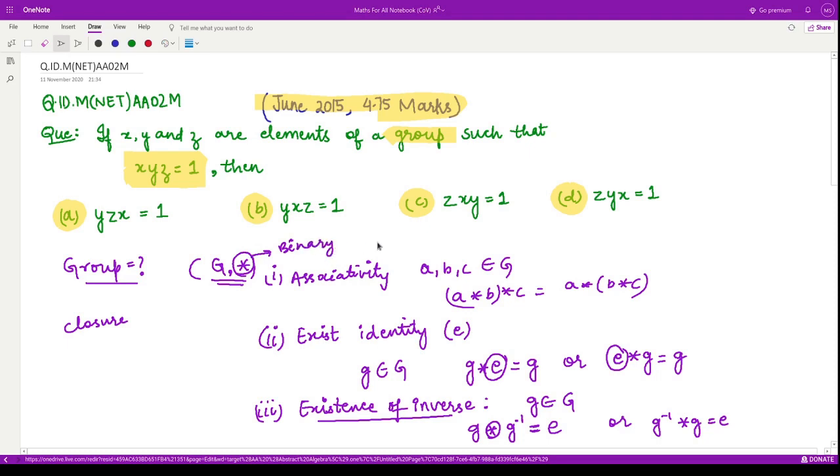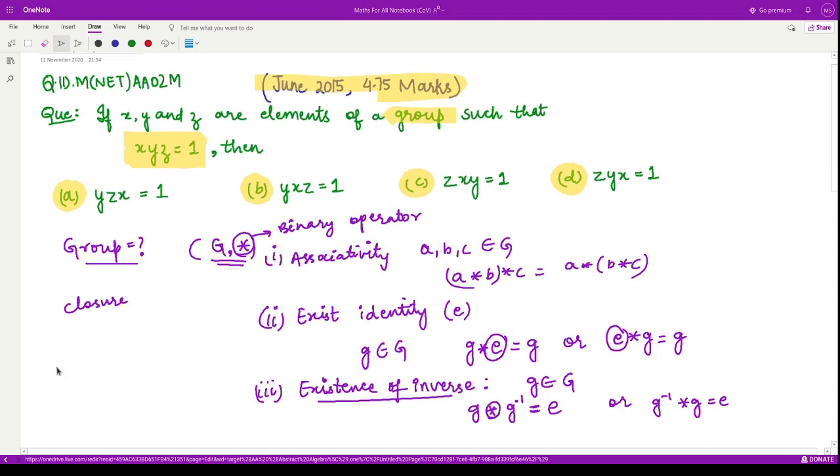Now coming back to our question, we are given xyz = 1. They have not specified which set or which operation we are given. Can you see from here which operation we are given? Clearly they are multiplied together. These three elements are from the set G, so we'll treat them as variables, and they are multiplied together. That means this operation is multiplication. Now the only properties that we can work with are these group properties.